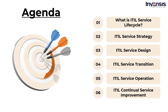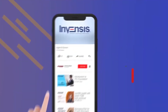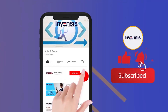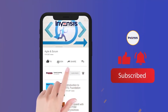Before we get started, I would like to address the agenda for today's session. We will start by talking about what exactly is the idle service lifecycle, then discuss the various phases: idle service strategy, idle service design, idle service transition, idle service operation, and idle continual service improvement. I hope the agenda for today's session is clear. If you like our video, do not forget to subscribe to our YouTube channel and hit the notification bell to never miss an update from the Invensis Learning channel.